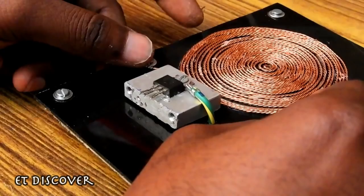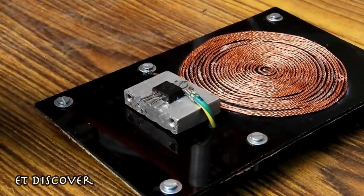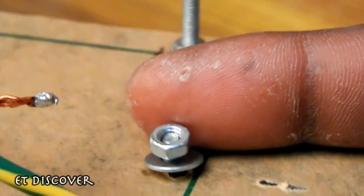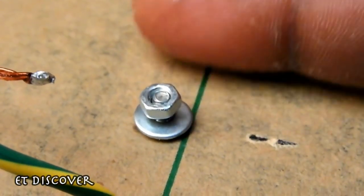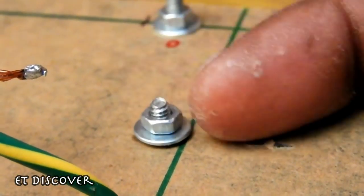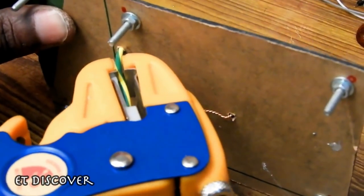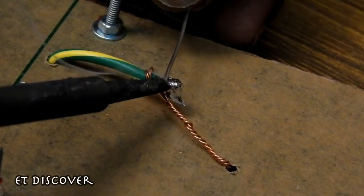Now I took an N-channel MOSFET and attached it with a heatsink. And after that attached it on the glass pad with some screws. And I connected the MOSFET's drain pin to the copper wire's first pin.